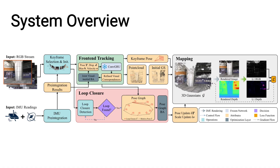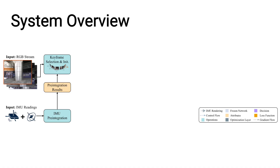Here is an overview of our VIGS SLAM system. VIGS SLAM takes sequential RGB frames and selects keyframes based on optical flow magnitude. For each newly selected keyframe, we perform IMU preintegration with respect to the previous keyframe and use the results to initialize its pose.